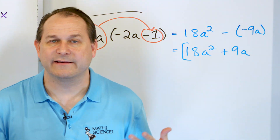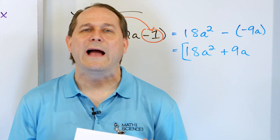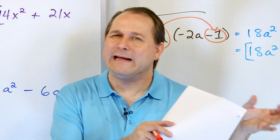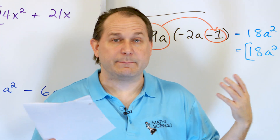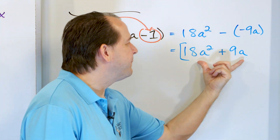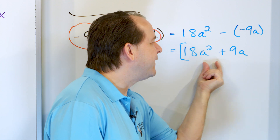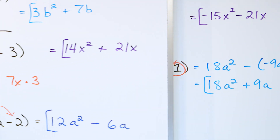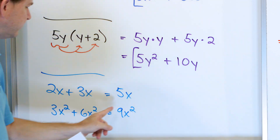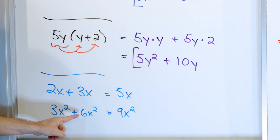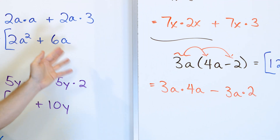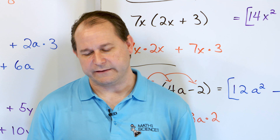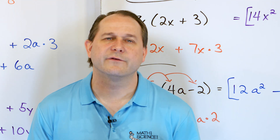Practice multiplying these expressions. We're combining the distributive property with adding exponents and simplifying expressions. We know we cannot combine terms like a squared and a — even though the variables are the same, the exponents are different, making them unlike terms. Only when the variables and the exponents both match can you combine by addition. Practice all of these, then follow me on to part two, where we'll continue building your skills with multiplying expressions.